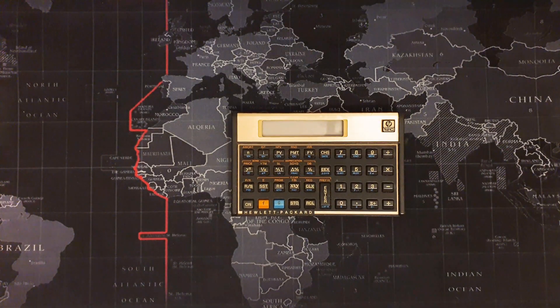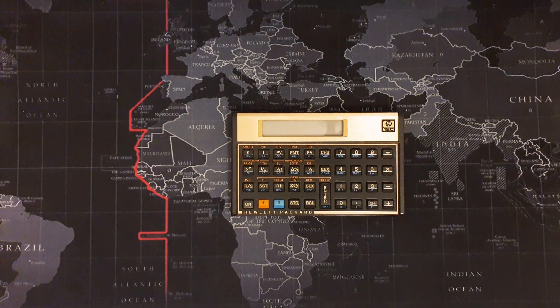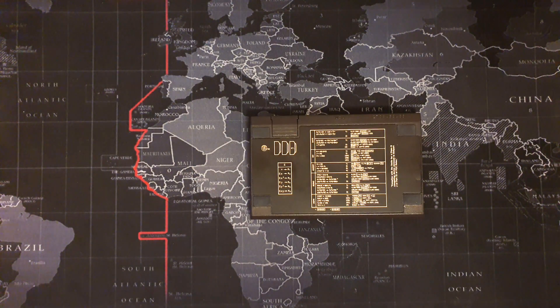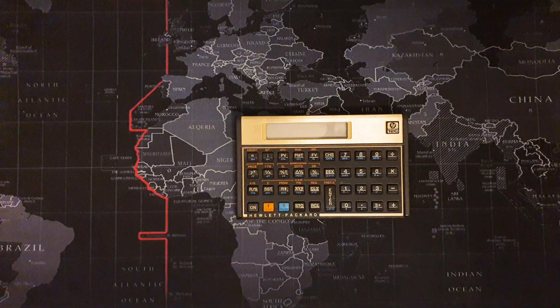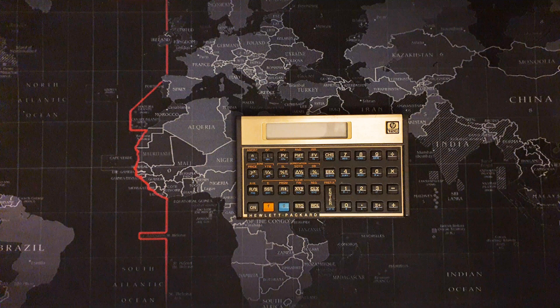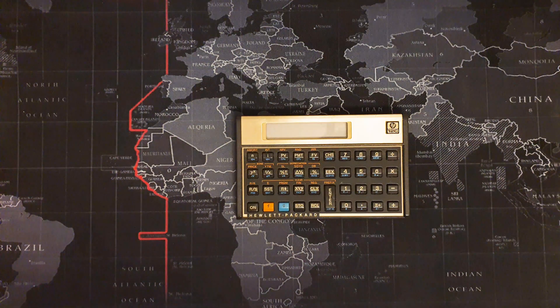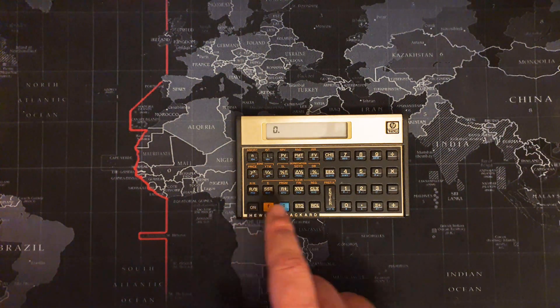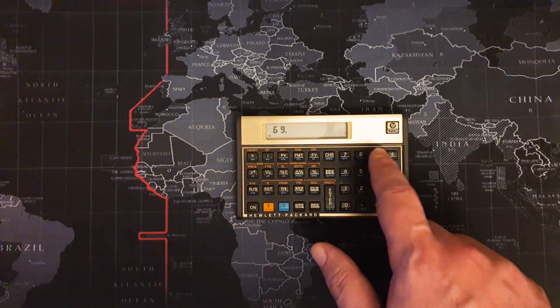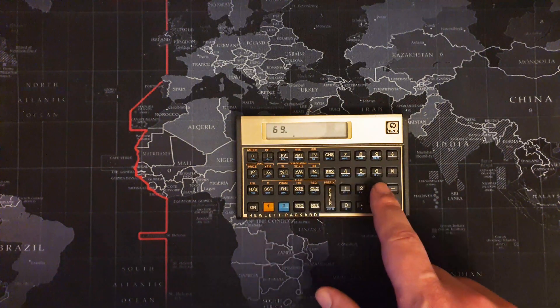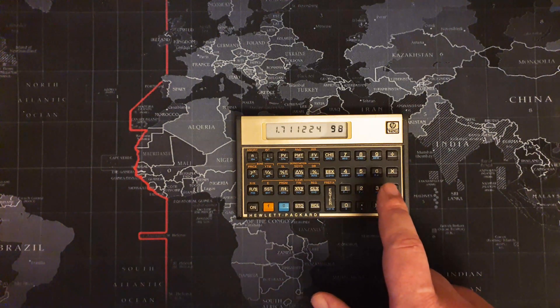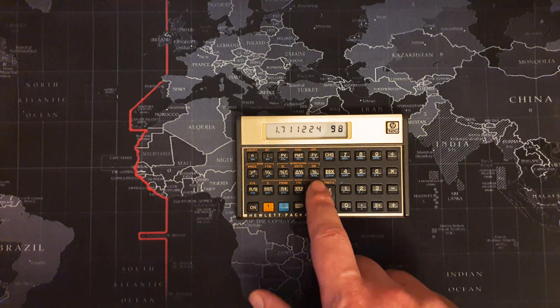If we pull up the Hewlett-Packard 12C, this is a model that runs off three button cell batteries. So we know that it's got either a 1L or 1R range processor running at 884 kilohertz. Let's see how the HP 12C handles 69 factorial. There was a slight pause. Let's have a look again.